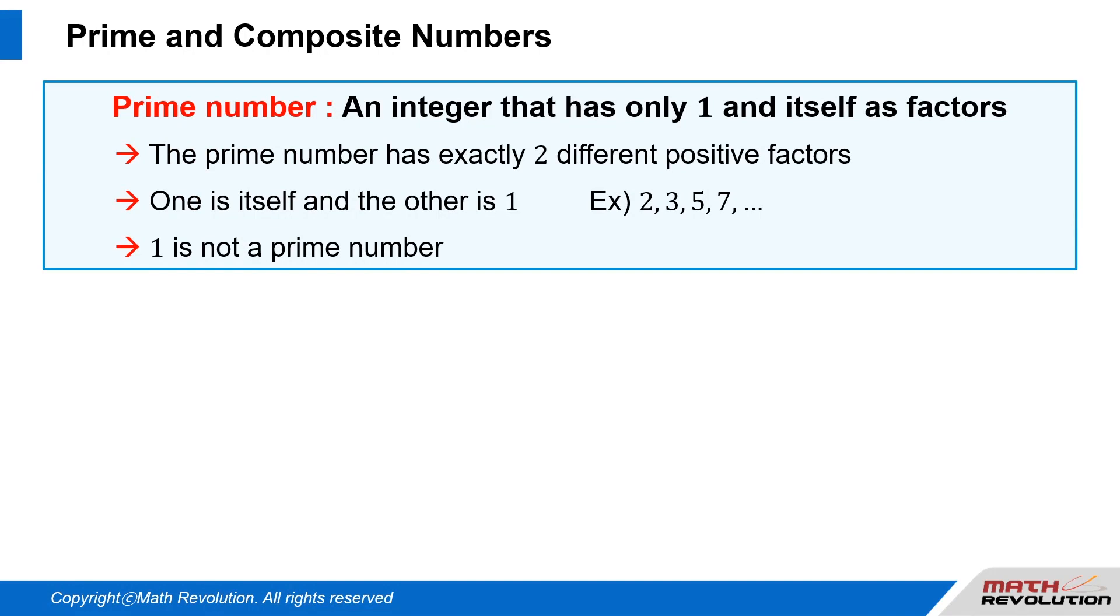A prime number is an integer that has one and itself as its only positive factors. The prime number has exactly two different positive factors: one is itself, and the other is one. For example, 2, 3, 5, 7, and so on. One is not a prime number.